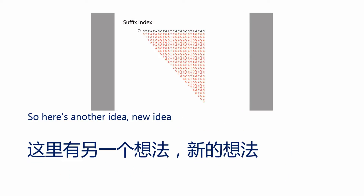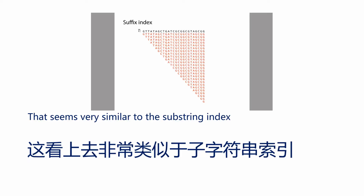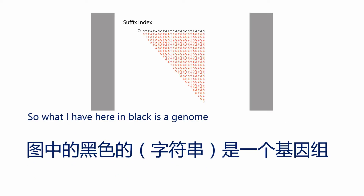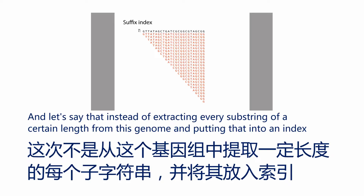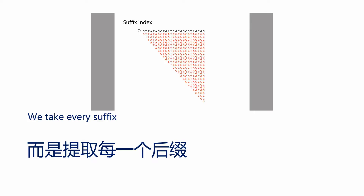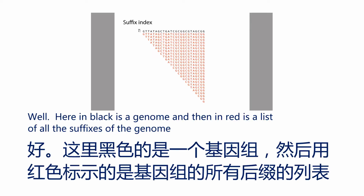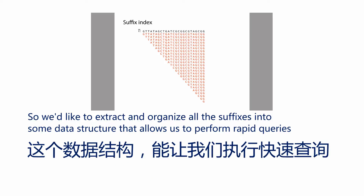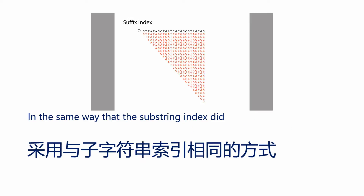Here's a new idea that seems very similar to the sub-string index, but actually leads to some very different and interesting new index data structures. What we have here in black is a genome. Instead of extracting every sub-string of a certain length and putting that into an index, we take every suffix. Here in black is a genome, and then in red is a list of all the suffixes of the genome. We'd like to extract and organize all the suffixes into some data structure that allows us to perform rapid queries in the same way that the sub-string index did.